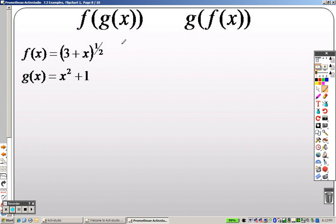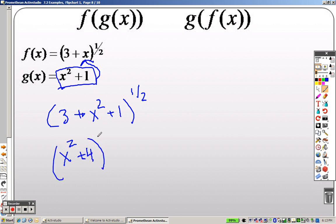Next up is composition. Basically this is saying take g of x, which is this right here, and plug it in for x in f. So this is like saying you have 3 plus x squared plus 1 because I took that out and put this in all to the 1 half. Which is now like saying x squared plus 4 to the 1 half.